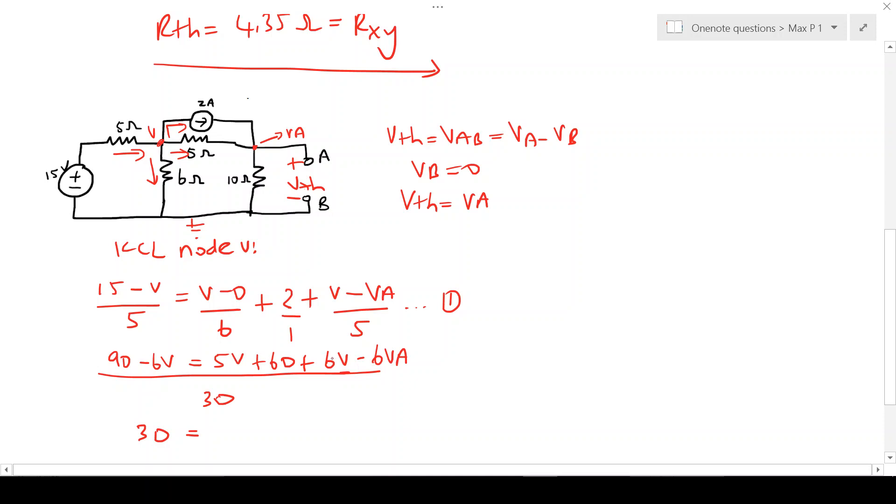So 90 minus 60 will give you 30, 6 plus 5 will give you 11, plus 6 will give you 17, and that's our first equation.